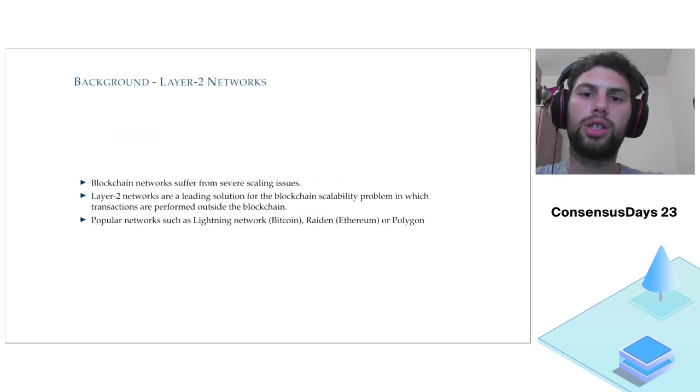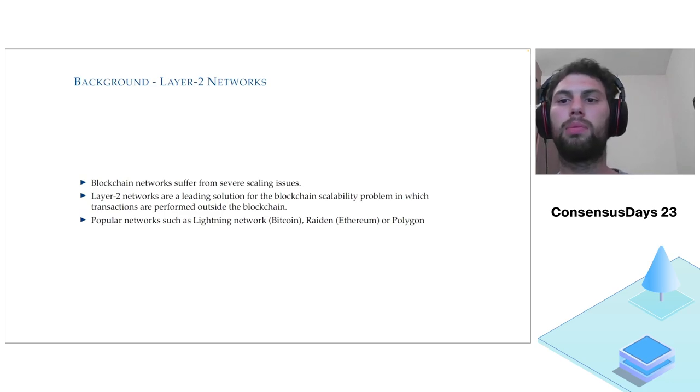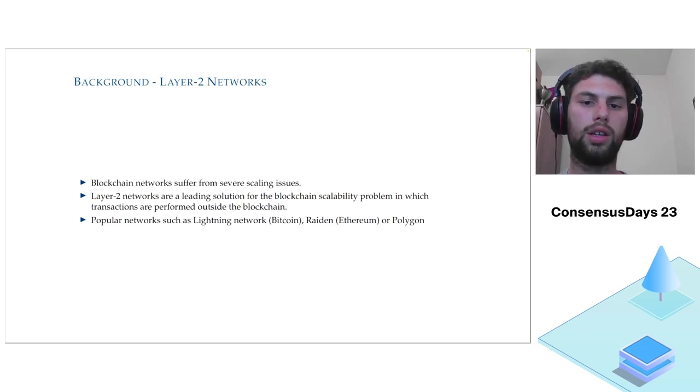Blockchain networks are very useful, but they still suffer from major scalability issues. Layer 2 networks are solutions that try to deal with scalability issues by decreasing the number of transactions performed on-chain and moving them outside of the chain. The Lightning Network, which we focus on in our paper, is Bitcoin's main Layer 2 solution.